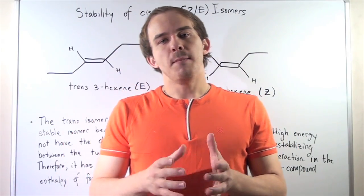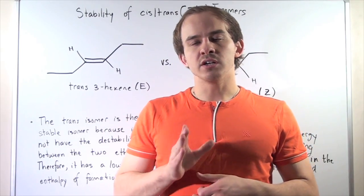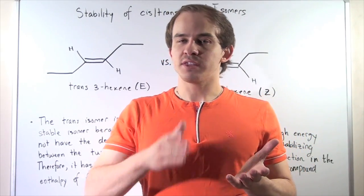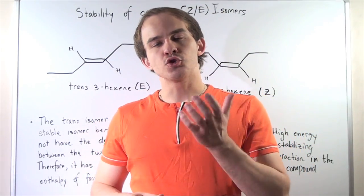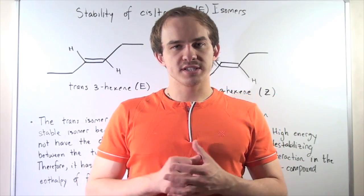So for any given alkene, many different types of isomers can exist. In this lecture, we're going to compare the cis or the Z-isomers with the trans or the E-isomers, and we're going to discuss which ones are more stable.